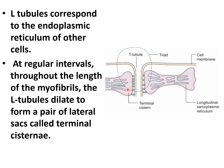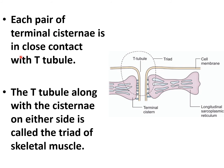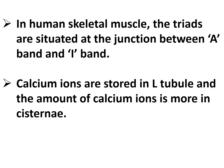Each pair of terminal cisternae is in close contact with T-tubules. The T-tubules along with the cisternae on either side is called the triad of skeletal muscle. In human skeletal muscle, the triads are situated at the junction between the A-band and I-band. Calcium ions are stored in L-tubules, and the amount of calcium ions is greater in the cisternae.